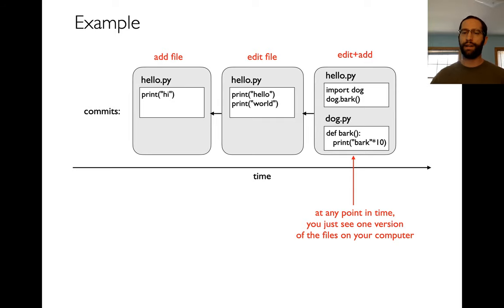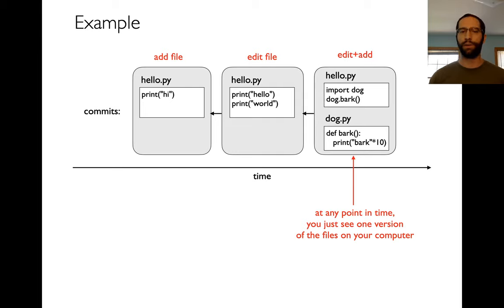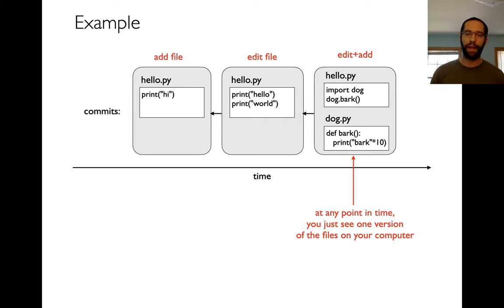When you're actually working in the code, at any given point in time you're just going to see one version that you're working on. Normally you can forget about all these older versions unless you want to go back to them or do some other things.